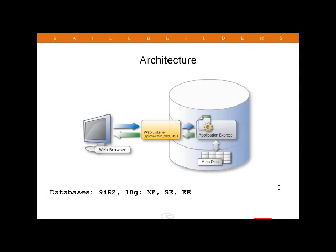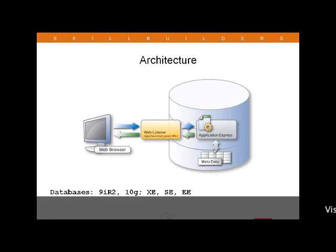Here we see a high-level overview of the architecture used by APEX. On the left we have a web browser, in the middle a web listener, and on the right is the Oracle database. An end user using their web browser will go to one of your APEX applications by entering the URL in the browser. That sends a request to the listener, which recognizes it as an APEX request and sends it along to the APEX engine in the Oracle database. That APEX engine uses metadata and its own schemas combined with other data in your custom schemas to generate the contents of an HTML web page, which it then forwards back out through the web listener to the client.